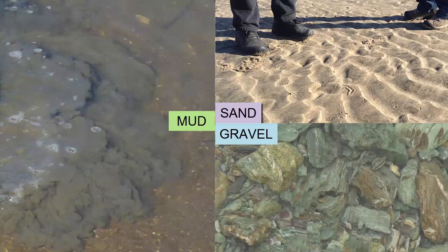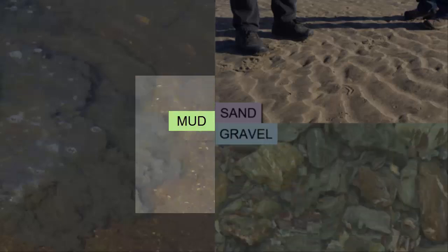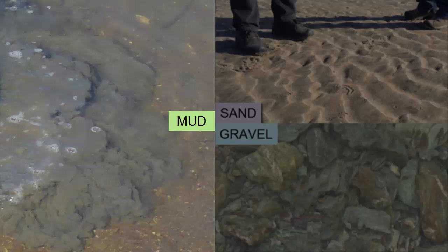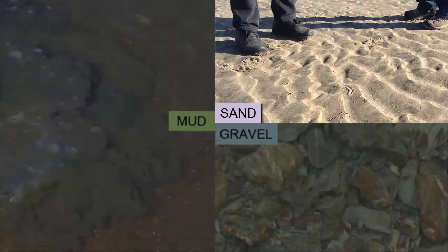Though there are many terms used to describe sediments of all sizes, we'll simplify them for this class into three categories: muds, sands, and gravels. Technically, gravels are sediment grains larger than 2 millimeters in diameter. Muds are less than 1/16th of a millimeter. Sands are everything in between.